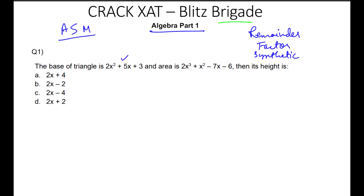So the base of the triangle is given to you and the area is given to you. This question is not just asking you to divide certain things, but it also requires the knowledge of the formula for the area of a triangle. When we calculate the area of a triangle, the formula is: area equals half into base into height. Now if this is my area, one variable is unknown and the others are already given — base is given, area is given, 1/2 is a constant. So we need to calculate the height.